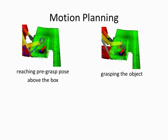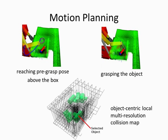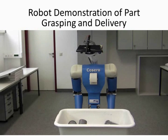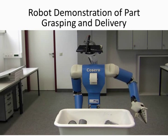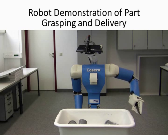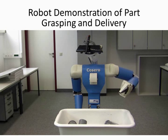We divide the planned motion into two steps. First, reaching the pre-grasp pose above the box, and second, grasping the object. Planning is performed in an object-centric, local multi-resolution collision map. To increase planning speed, we search plans for the most crucial parts of the trajectories first, for instance, finally approaching the object.